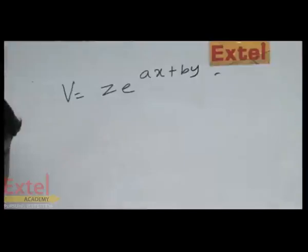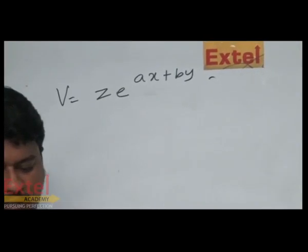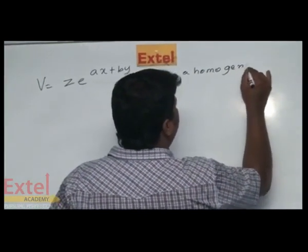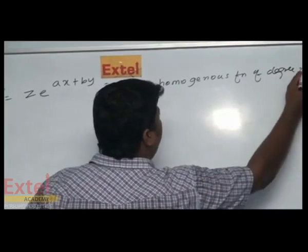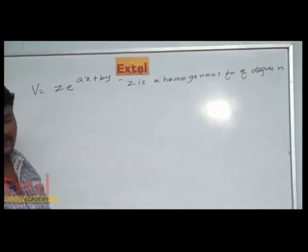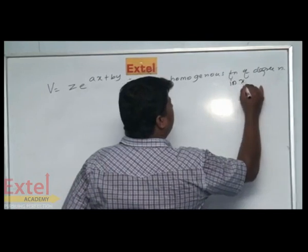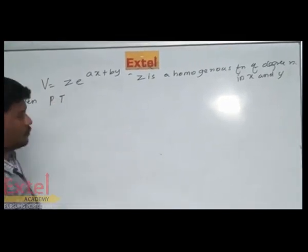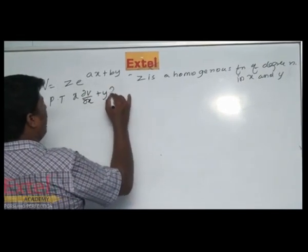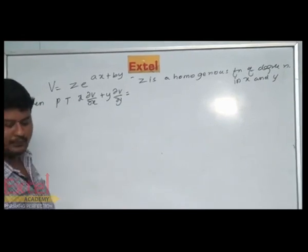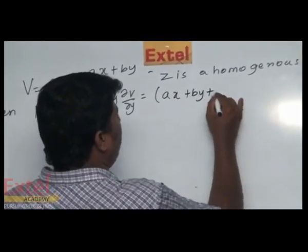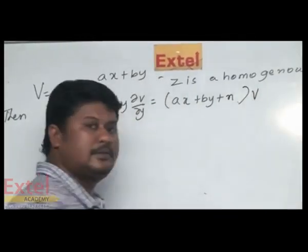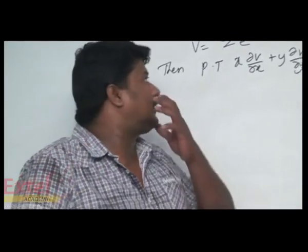Given that v is equal to z·e^(ax+by), where z is a homogeneous function of degree n in x and y, then prove that x·∂v/∂x + y·∂v/∂y is equal to (ax + by + n)·v. This is a six marks question.